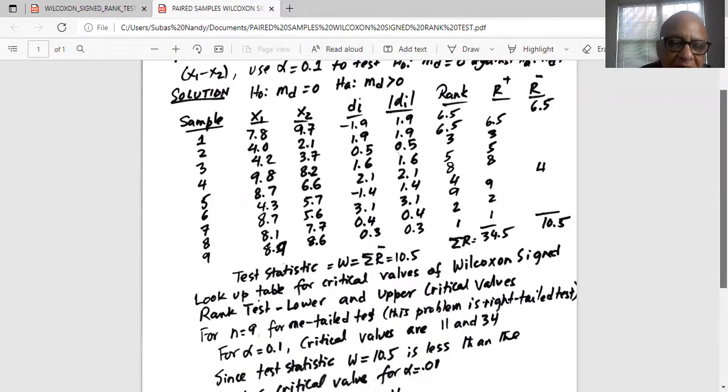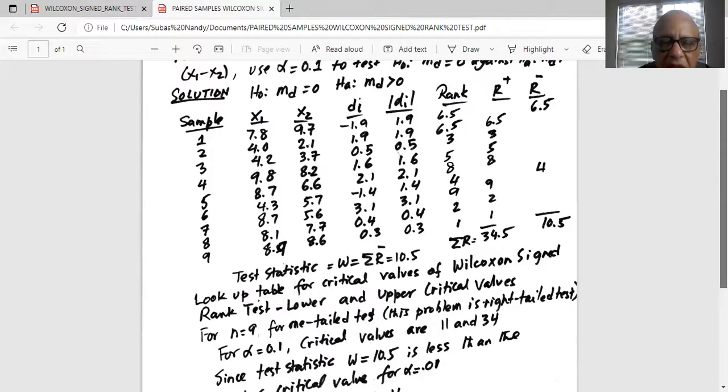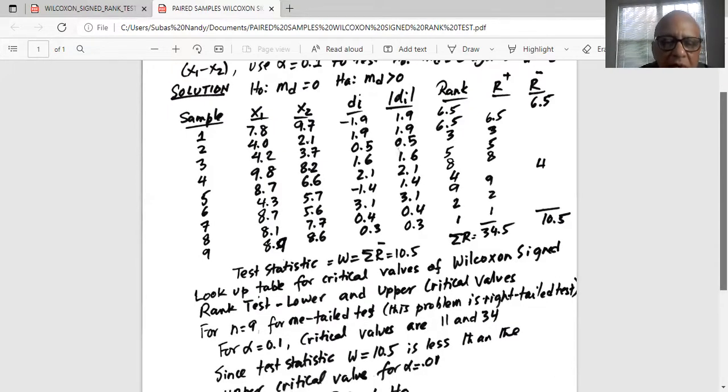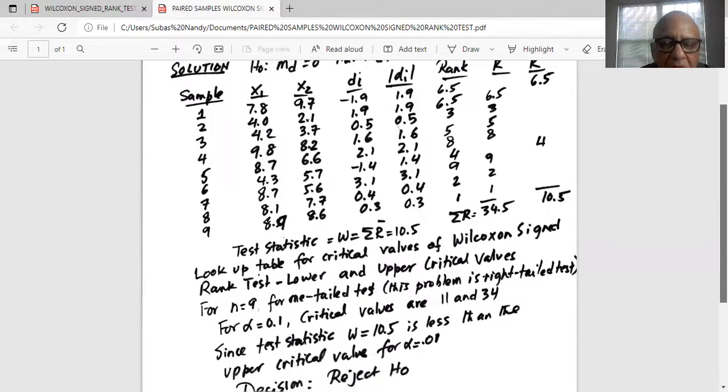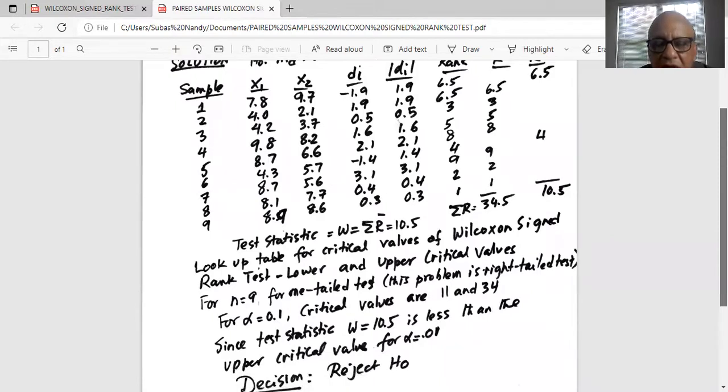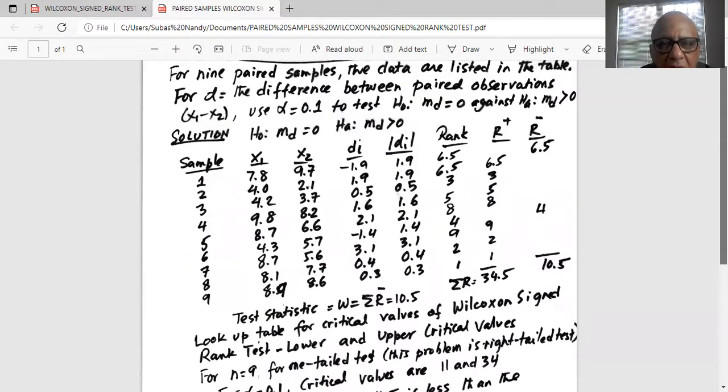Then we look up table for critical values of Wilcoxon signed rank test which I will show to you at the end of this presentation. We look up the lower and upper critical values for n is equal to 9 for one tail test. This problem is a right tail test. For alpha equal to 0.1, critical values are 11 and 34.